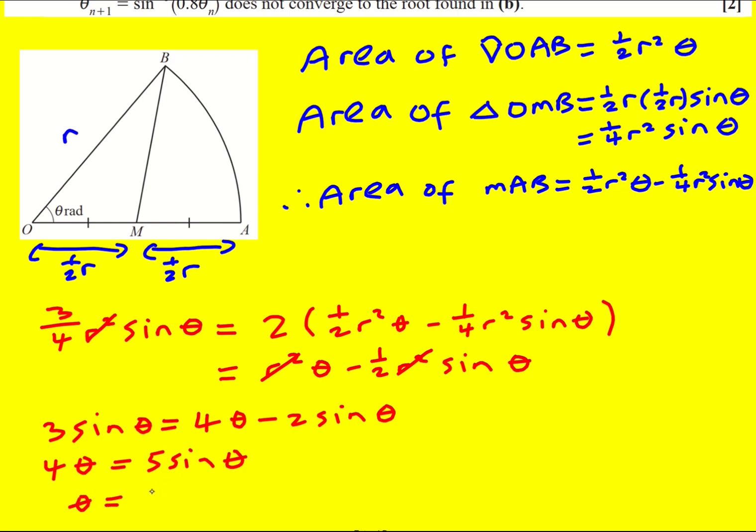Therefore 4 theta is going to be 5 sine theta. Theta is going to be 5 over 4 sine theta or 1.25 sine theta. A good little derivation here.